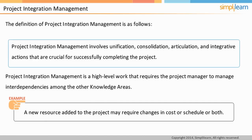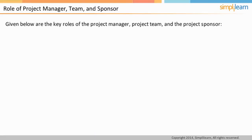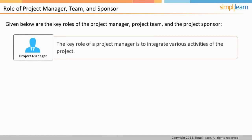Let us discuss the key role of project manager, sponsor, and team. The project manager, team members, and project sponsors have different roles to play in a project. The project manager is supposed to play multiple roles in the project — the key role is to perform integration. The project manager puts all the pieces of the project together into a cohesive whole, trying to ensure that the project is done faster, cheaper, and utilizes resources optimally while meeting the project objectives.